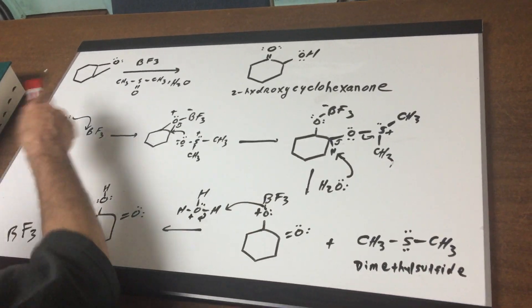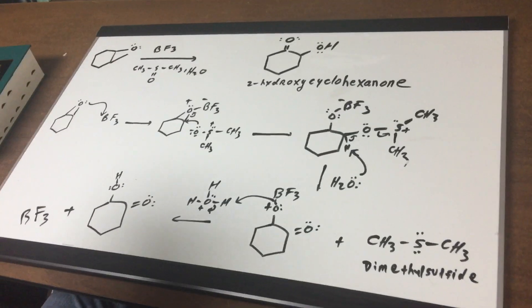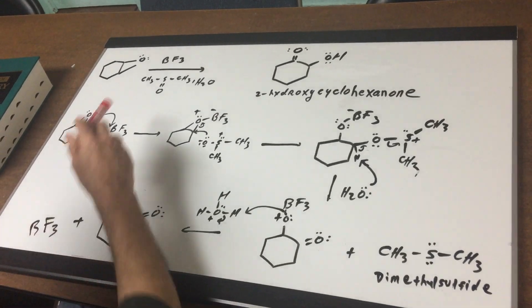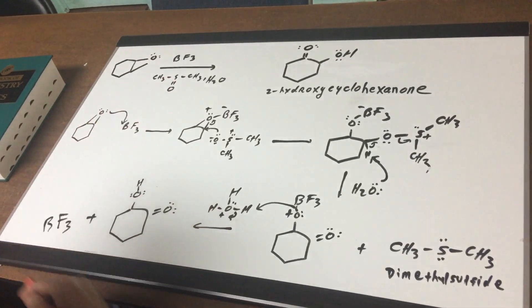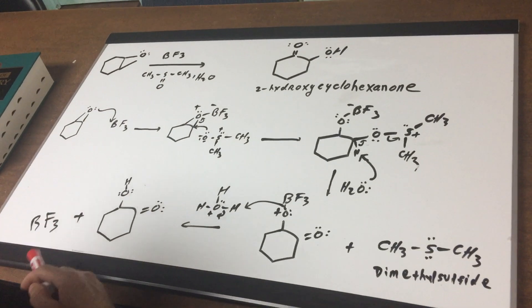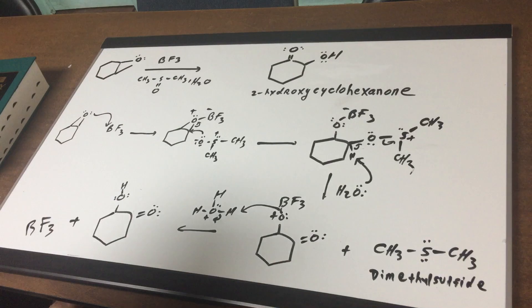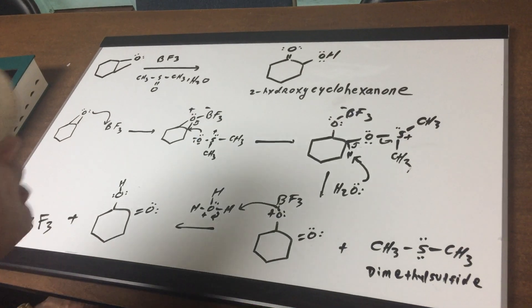We're going to take a compound called cyclohexane oxide and treat it with BF3, dimethyl sulfoxide, and water. We're going to end up getting a compound called 2-hydroxycyclohexanone.